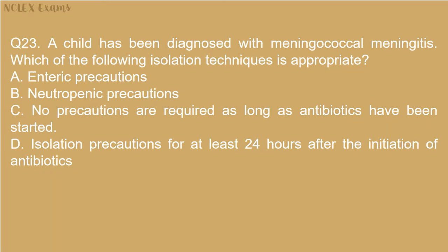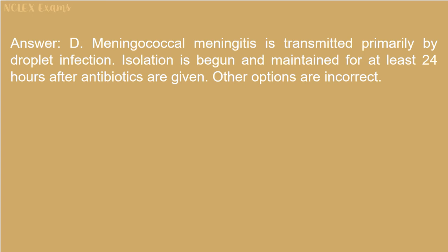Question 23: A child has been diagnosed with meningococcal meningitis. Which of the following isolation techniques is appropriate? A. Enteric precautions. B. Neutropenic precautions. C. No precautions are required as long as antibiotics have been started. D. Isolation precautions for at least 24 hours after the initiation of antibiotics. Answer: D. Meningococcal meningitis is transmitted primarily by droplet infection. Isolation is begun and maintained for at least 24 hours after antibiotics are given.